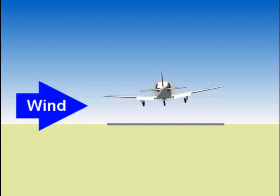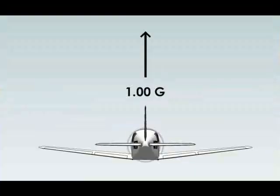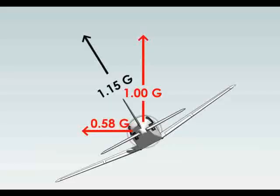First, you bank the airplane to the left. Now, you can see from this diagram that lift is perpendicular to the wings. So, when you bank to the left, lift is now pulling you to the side as well as lifting the airplane up. This will cause the airplane to start sliding sideways to the left.